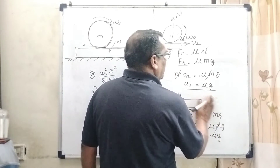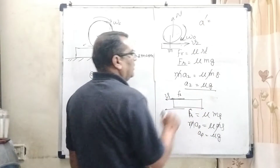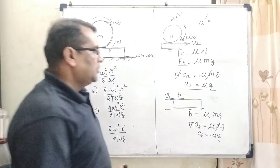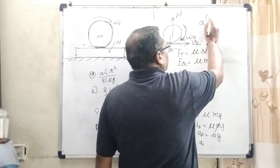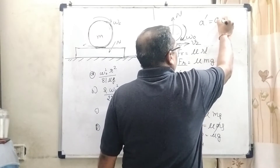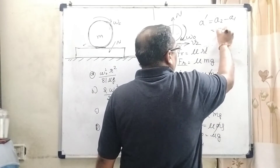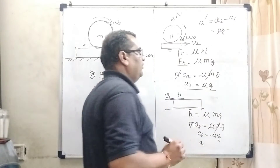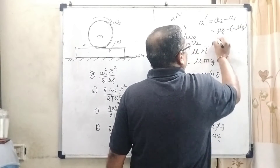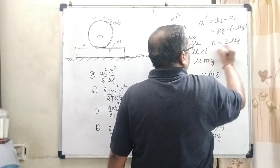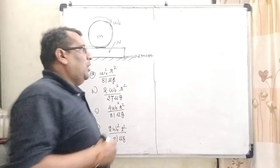Since the directions are opposite, we can talk about relative acceleration A dash. The relative acceleration of sphere with respect to plank: A relative equals A2 minus A1. A2 is mu g and A1 is negative mu g in the sphere's frame, so A dash equals 2 mu g. This is our first equation.